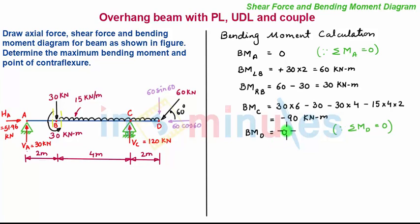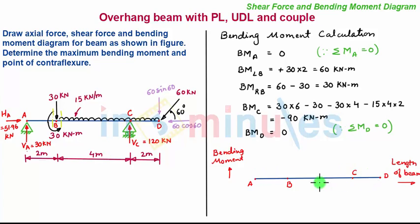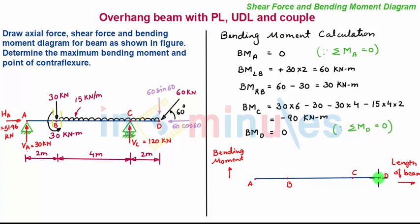So now we have found out the bending moment at all the salient points. Now we draw the variation of the bending moment diagram. This is the zero line of the bending moment diagram — positive bending moment is above the line and negative bending moment is below the line. Along the x-axis we have the length of the beam and we have denoted all the salient points. Bending moment at A is 0 kNm.